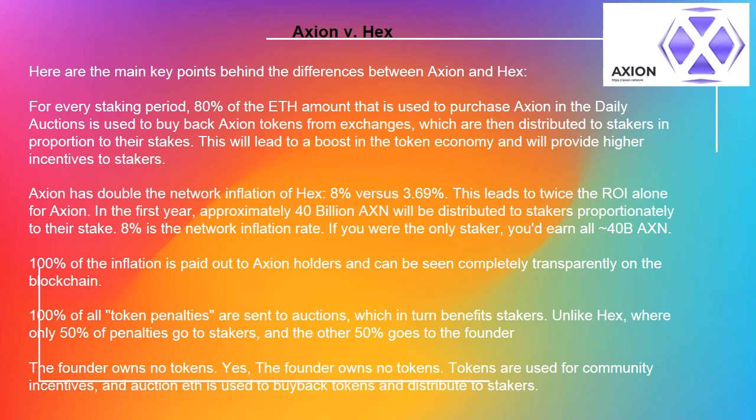8% is the network inflation rate. If you were the only staker, you'd earn all 40 billion AXN. 100% of the inflation is paid out to Axion holders and can be seen completely transparently on their blockchain. 100% of all token penalties are sent to auctions, which in turn benefits stakers — unlike HEX, where only 50% of penalties go to stakers.